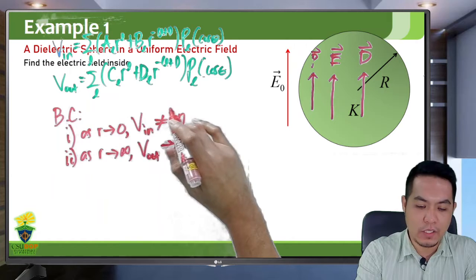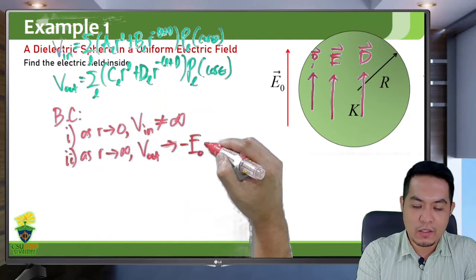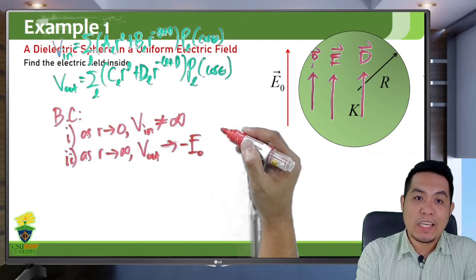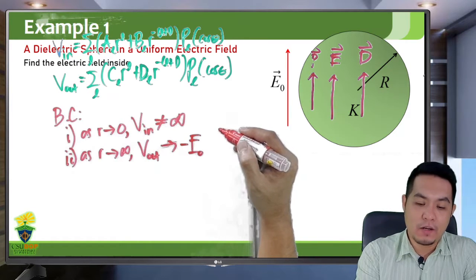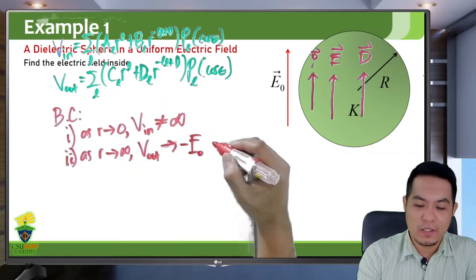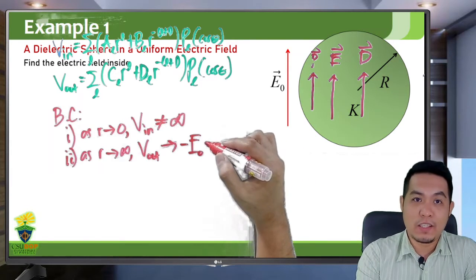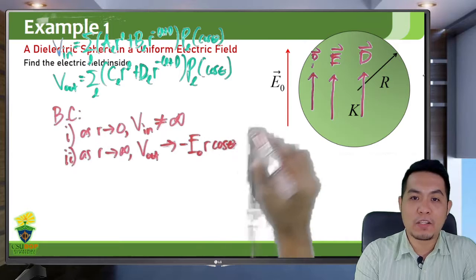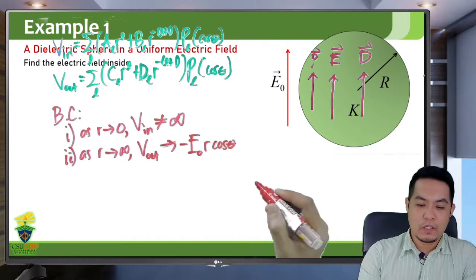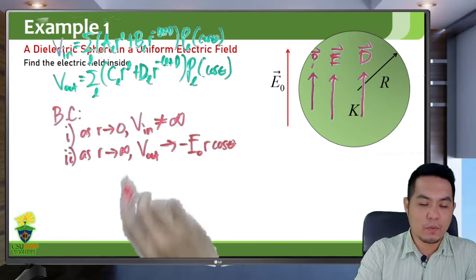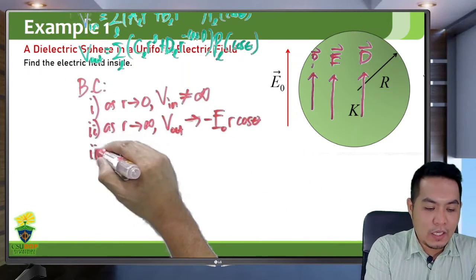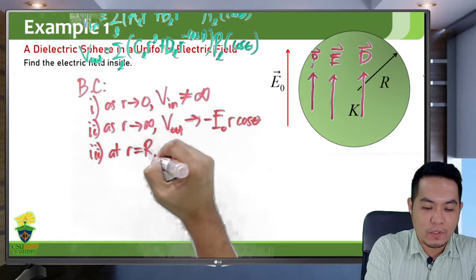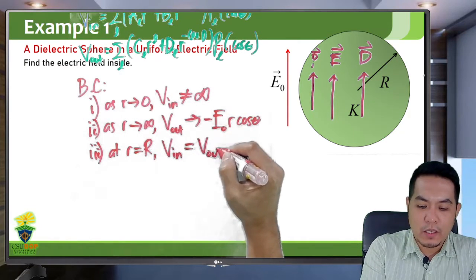We have encountered this boundary condition before: the potential approaches negative E₀ R cosθ as R approaches infinity. At the surface of the sphere at R equal to capital R, the potential inside must equal the potential outside. These are our boundary conditions: the potential at R=0 stays finite, at R→∞ it approaches −E₀R cosθ, at R=R the potentials match, and at R=R the perpendicular displacement is continuous.